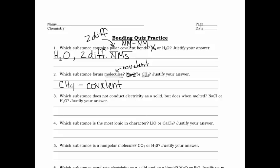Question three: which substance does not conduct electricity as a solid but does when melted? Covalent substances never conduct, metallic substances always conduct, and ionic substances conduct when melted or dissolved. We're describing an ionic substance here, so the answer is NaCl, and your reasoning is simply that it's ionic.